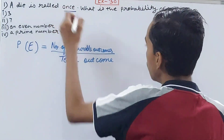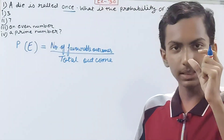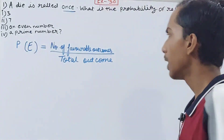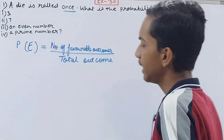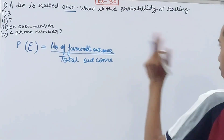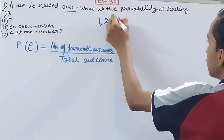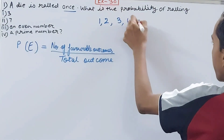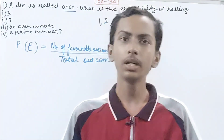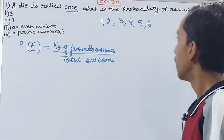A die is that cube we play with in board games — it has six numbers on it. If you roll a die, the possible outcomes are one, two, three, four, five, and six. Only six numbers can come on a die.